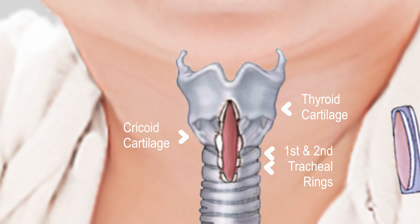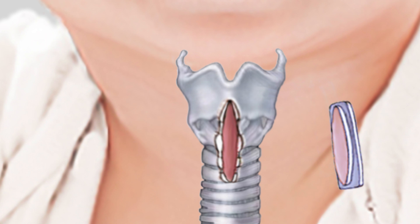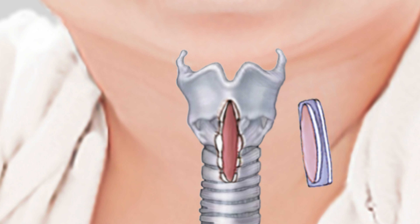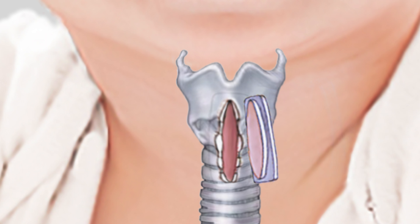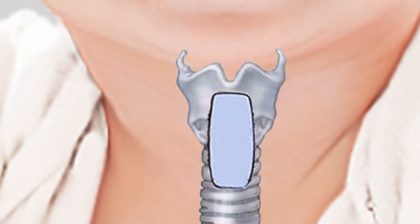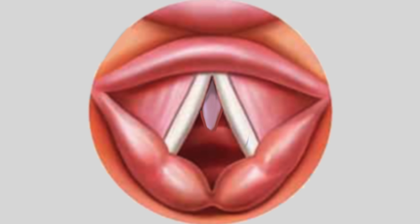A cartilage graft obtained from a rib is then shaped to fit into the incision made in the trachea. The graft is then secured with sutures. The airway is reexamined to ensure an adequate airway has been achieved.